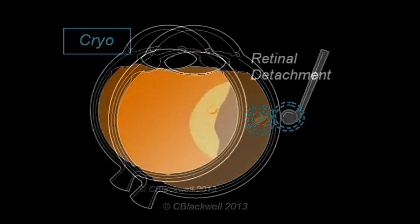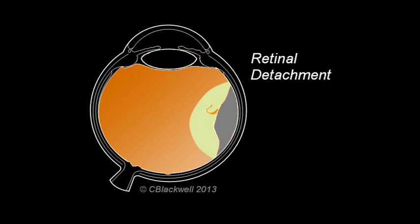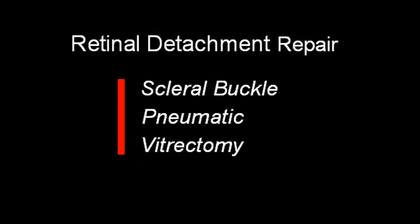Once the retina detaches, things become more complicated. There are three standard ways of repairing a retinal detachment. Each aims to get the retina back in position against the eye wall, relieve traction, and weld it so it will stay attached.